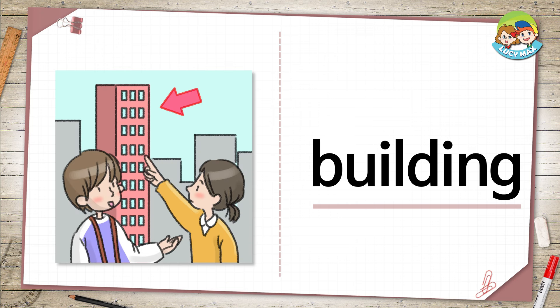Building. The girl points to a building. A building has a roof and walls. A house, a hotel, and malls are buildings. Do you think a factory is a building? Yes, it is a building. It has a roof and walls.